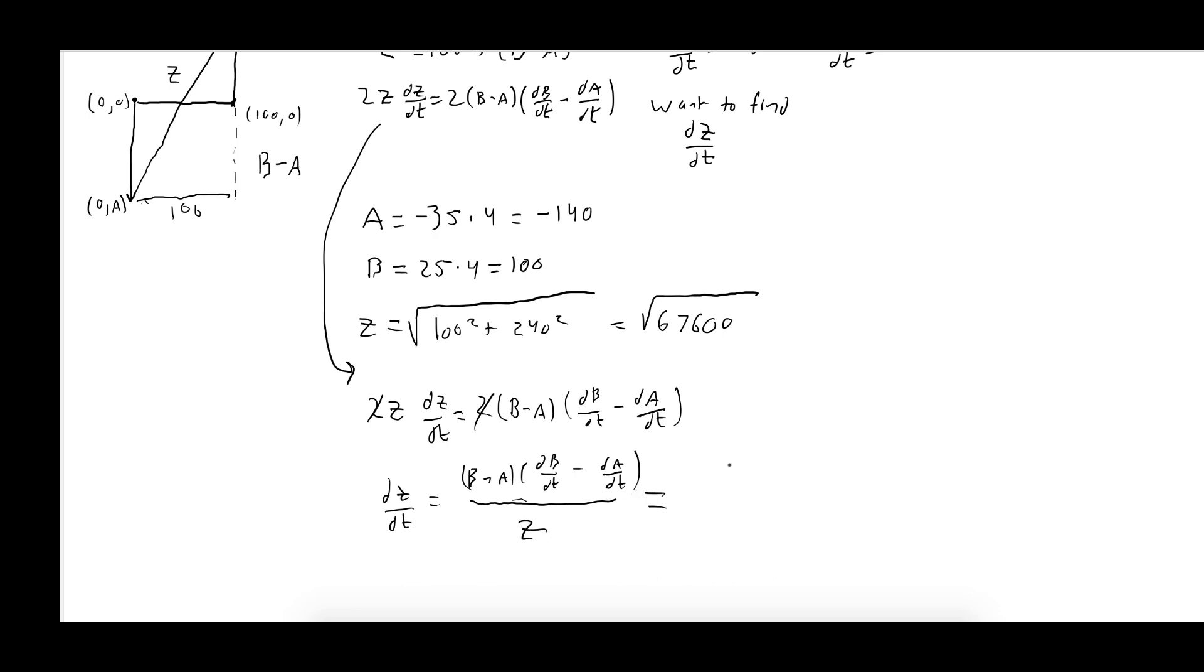which is equal to (B minus A) is 240, dB/dt was 25, dA/dt was negative 35, so times 60, all over the square root of 67,600 and that's the solution.